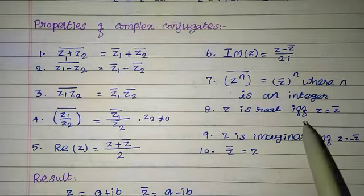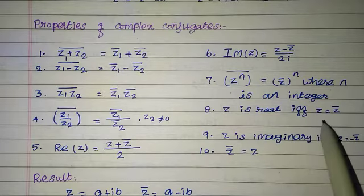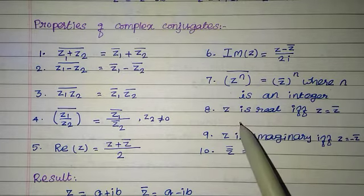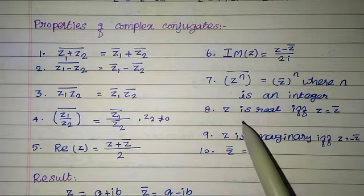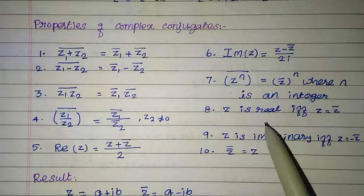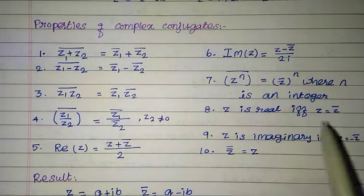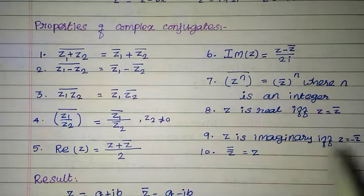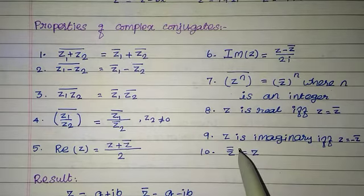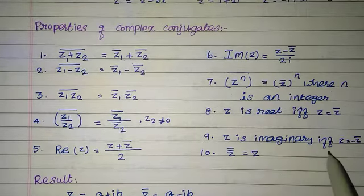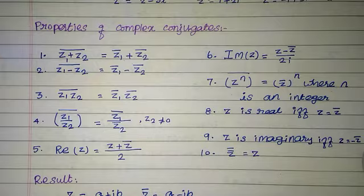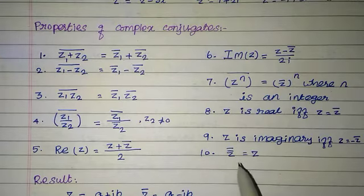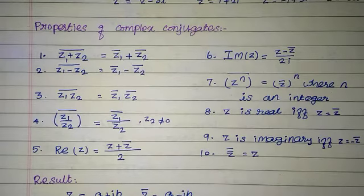z is real if and only if z equals z bar. To prove a complex number is purely real, we show z equals z bar. Similarly, z is imaginary if and only if z equals minus z bar. Also, z bar, the whole bar, equals z — that is, the conjugate of the conjugate of z is z itself.